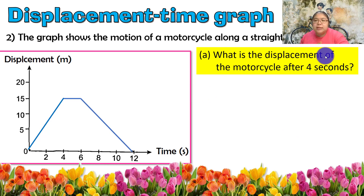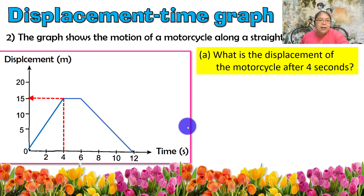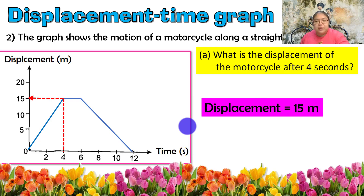Next graph: another DT graph showing the motion of a motorcycle. The question asks for the displacement after 4 seconds. We draw the line and read off the value — the displacement is 15 meters.